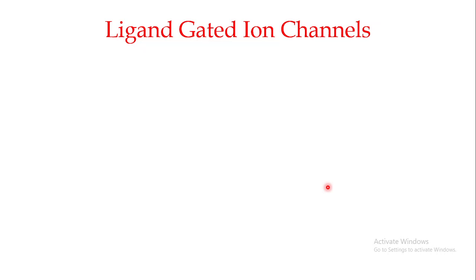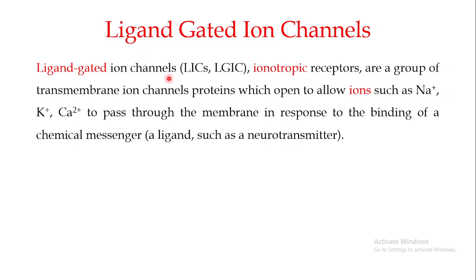The focus of this video is the ligand gated ion channels. These are known for short as LICs, or sometimes as LGICs. They are also known as ionotropic receptors. These ligand gated or ionotropic receptors are actually a group of transmembrane ion channel proteins which open to allow the movement of ions — such as sodium ions, potassium ions, calcium ions, and chloride ions — to pass through the membrane in response to the binding of a chemical messenger. Their opening is dependent on the binding of a ligand.